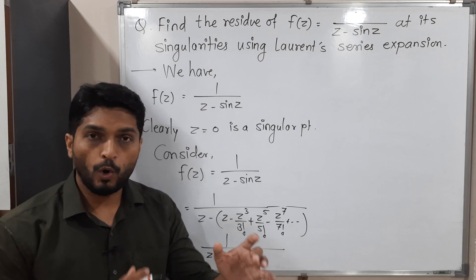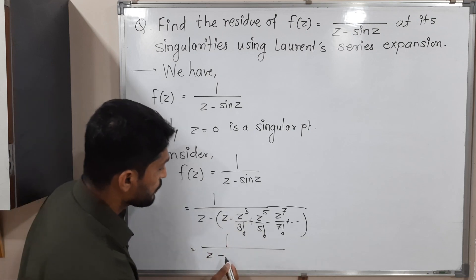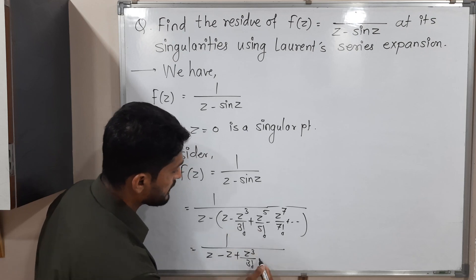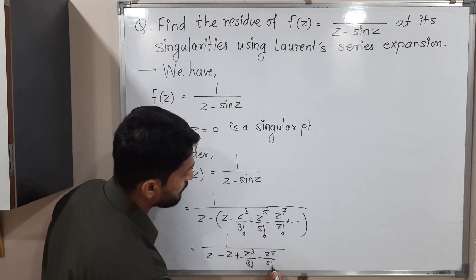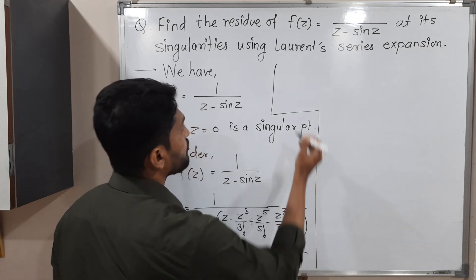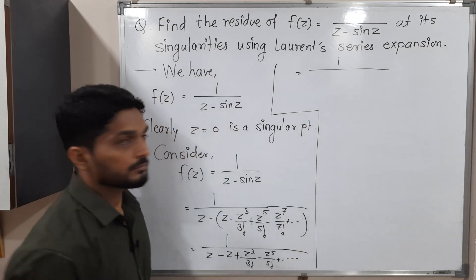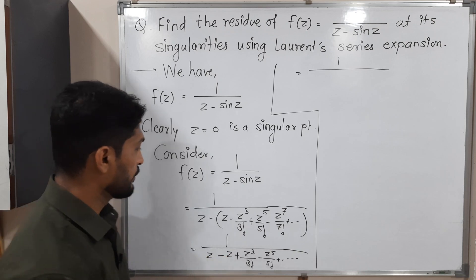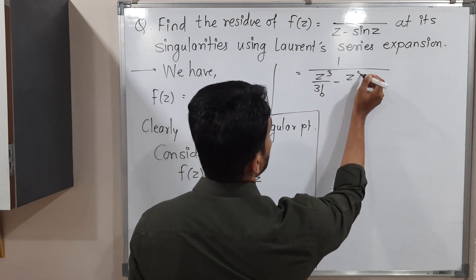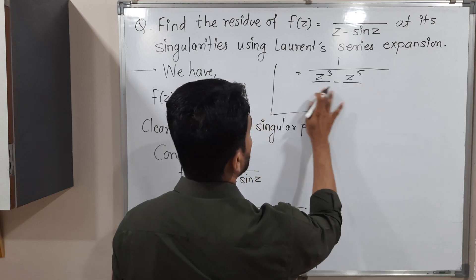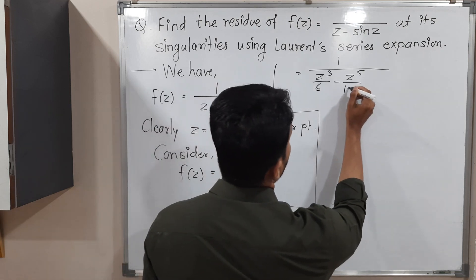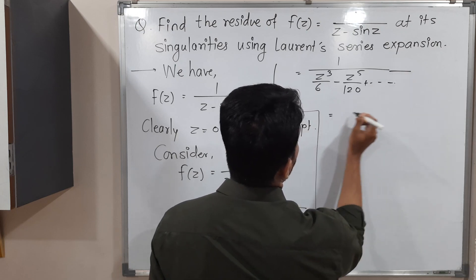Solving the bracket z − sin z: outside we have a minus sign, so all signs change. We get z − (z − z³/3! + z⁵/5! + ...) = z − z + z³/3! − z⁵/5! + ... The z terms cancel, leaving z³/3! − z⁵/5! + ... which is z³/6 − z⁵/120 + and so on.